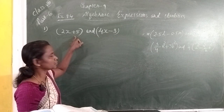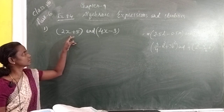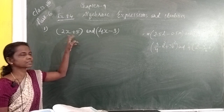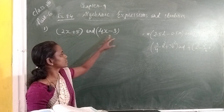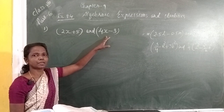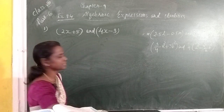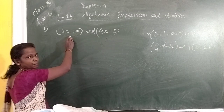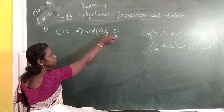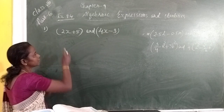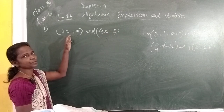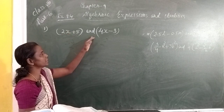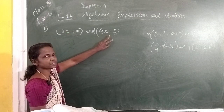Here are two expressions. Each expression has two terms — two times. So binomial multiplied by binomial. The first expression is 2x plus 5, and we multiply 2x plus 5 by 4x minus 3. The first expression has two terms and the second expression also has two times.